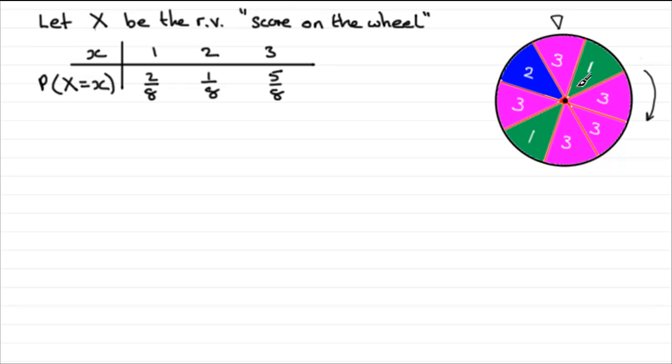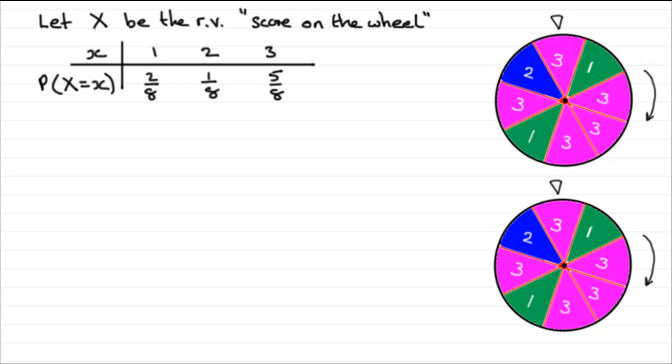Now what I want to do is suppose we took the same wheel again, but this time we squared all of these values. So instead of having 1 we've got 1 squared, 3 squared, 3 squared, and so on, all the way around here.